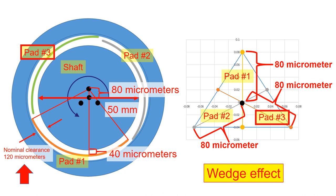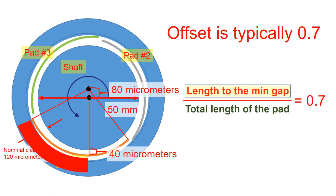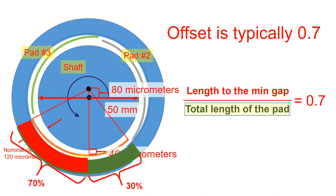If you have different size of shaft, small or large, the preloaded amount needs to be adjusted accordingly. It is also important to note that the typical offset is 0.7, which is defined by the length to the minimum gap over the total length of the pad.